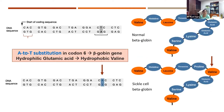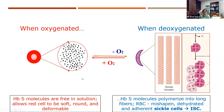The basic defect in sickle cell disease is an A-to-T transition in codon 6 of the beta-globin gene, causing a change in the amino acid from glutamic acid — a hydrophilic amino acid — at that position, which gets replaced by valine, a hydrophobic amino acid. At the sixth position we can see this change from glutamic acid to valine.